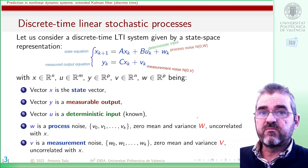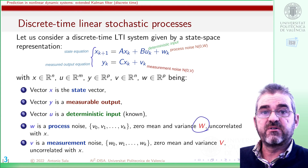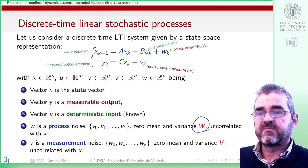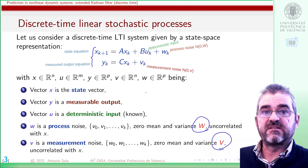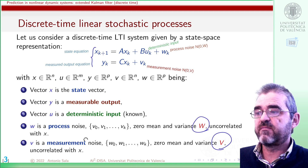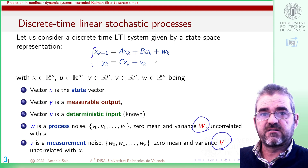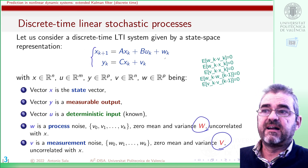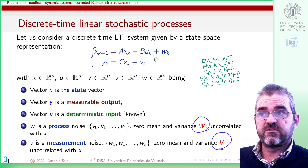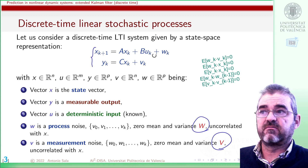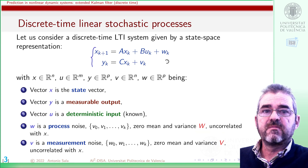We will assume that the variance of the process noise, capital W, is known, as well as the variance matrix capital V of the measurement noise. Standard assumptions are that process and measurement noise are not correlated with anything else.